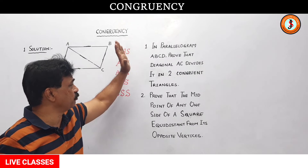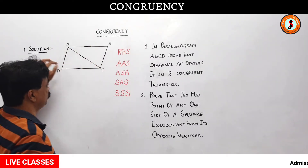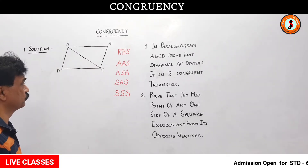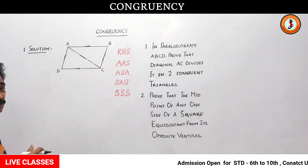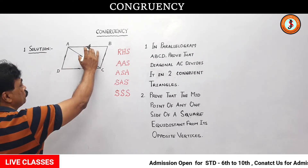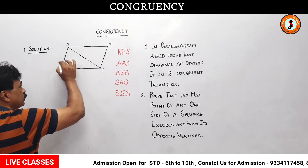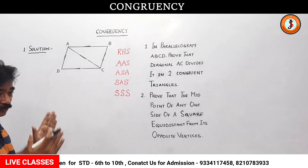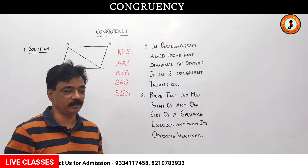Now, the first question: in parallelogram ABCD, prove that the diagonal AC divides it into congruent triangles. I have drawn the parallelogram — a parallelogram has both pairs of opposite sides parallel and equal. I have made sure not to draw it like a rectangle. Remember, a parallelogram should be drawn inclined, because if you draw it straight it appears to be a rectangle. A rectangle is a special case of a parallelogram where all angles are 90 degrees.